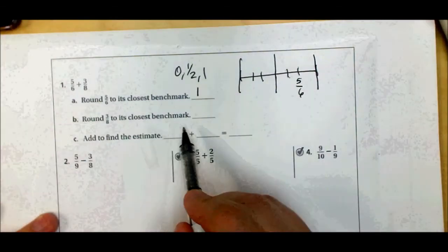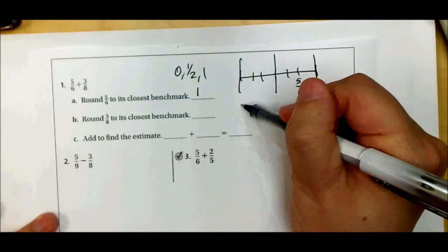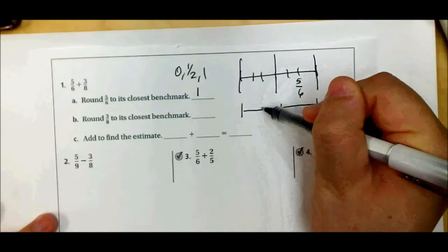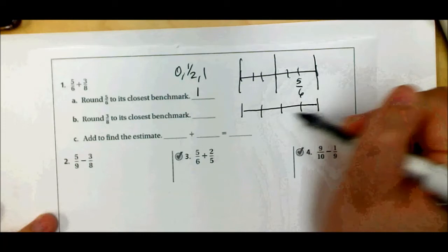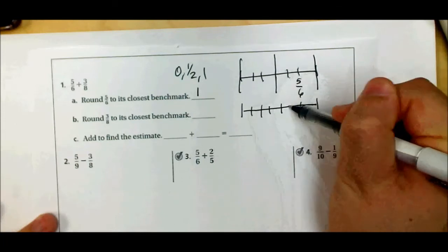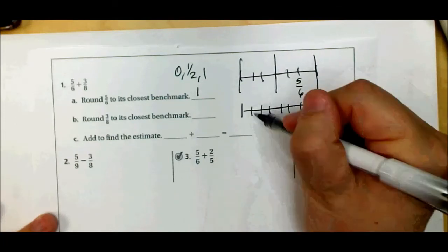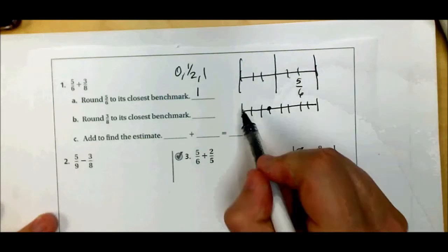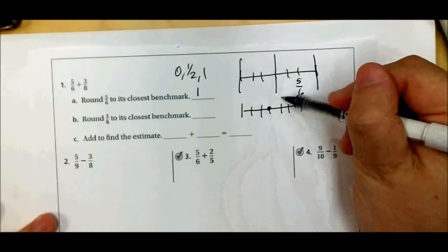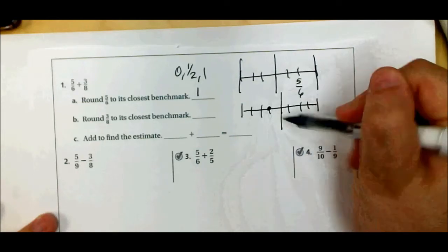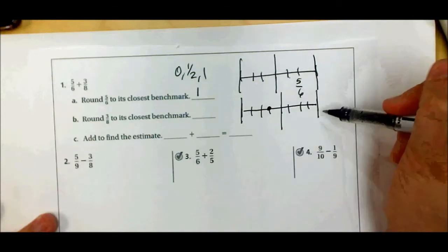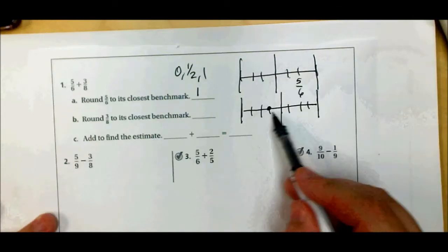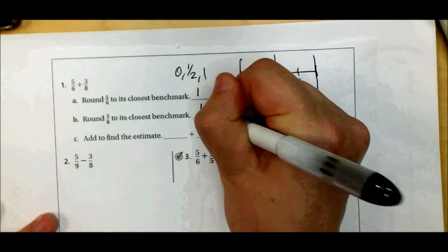Now three-eighths — I'm going to draw three-eighths on a number line as well. There are fourths and eighths. Three-eighths is going to be right here: one, two, three. This is about half; this is one whole, and this is zero. Three-eighths is clearly closest to one-half.